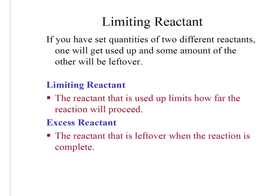If you have set quantities of two different reactants, one is going to get used up before the other one, and you'll have leftover of your other one that's called your excess. So your limiting reactant is the one that limits how far the reaction will proceed and how much product you'll make. The excess reactant is what will be left over when the reaction is complete.